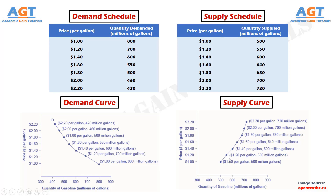As the price rises, say, from $1 per gallon to $2.20 per gallon, the quantity supplied increases from 500 gallons to 720 gallons. Conversely, as the price falls, the quantity supplied decreases.